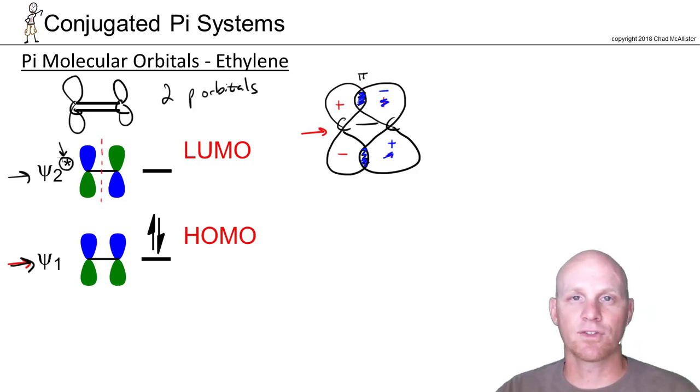So the lower half bonding, the upper half of your orbitals that you draw are going to be anti-bonding. And again, starting with just two p orbitals involved in this pi system, that's why there's only two molecular orbitals.